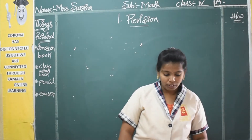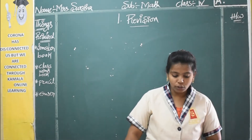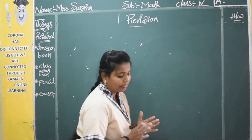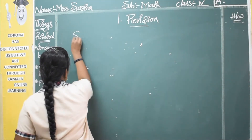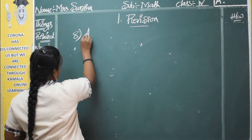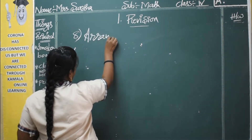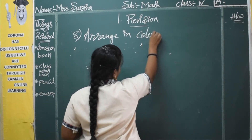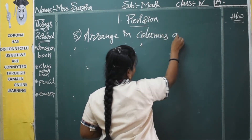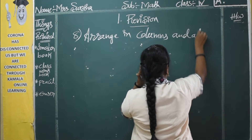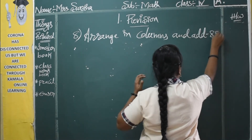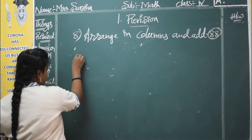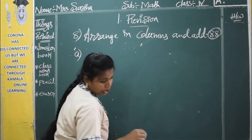So for the 8th bit, you have to arrange in columns and add. So what you have to do here? Whatever the question, you have to add each in the columns. First, write the question.